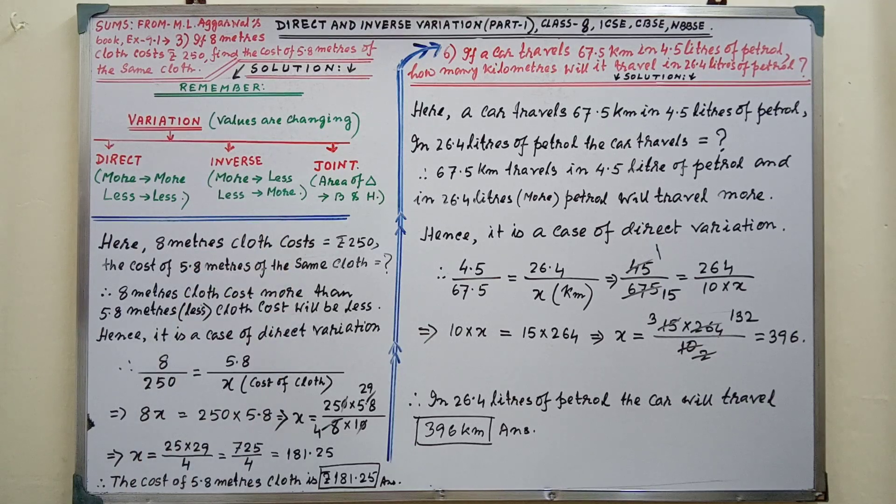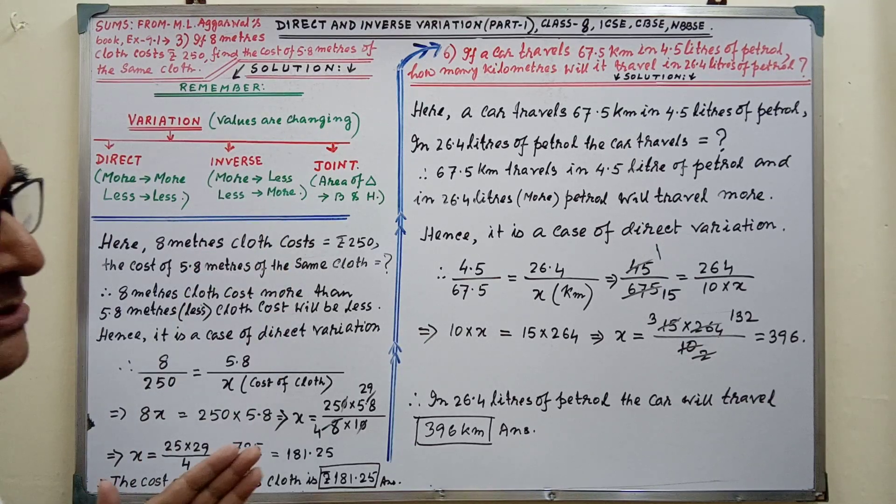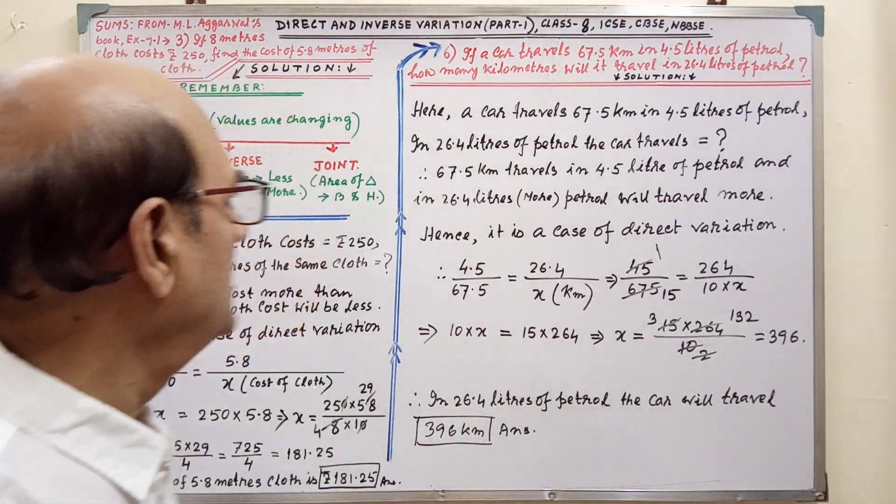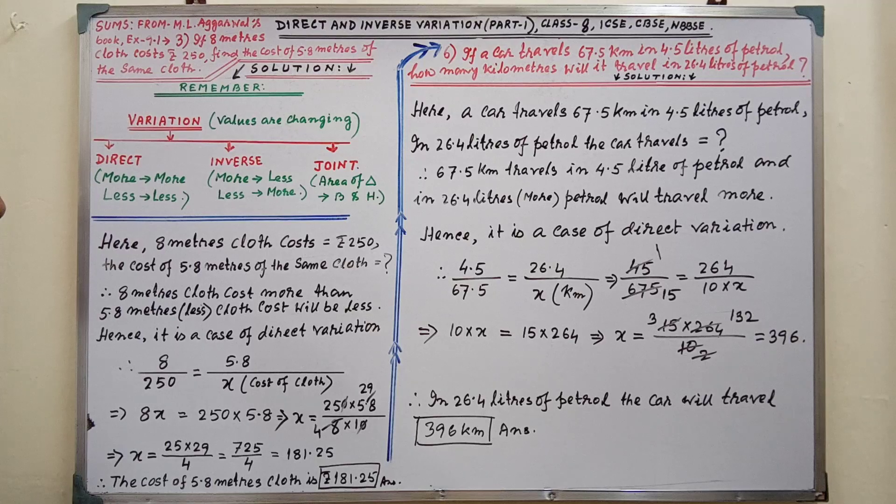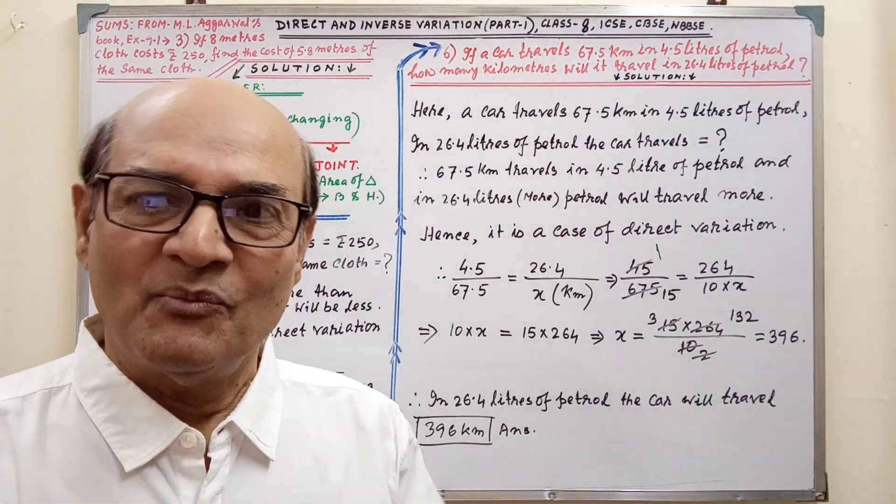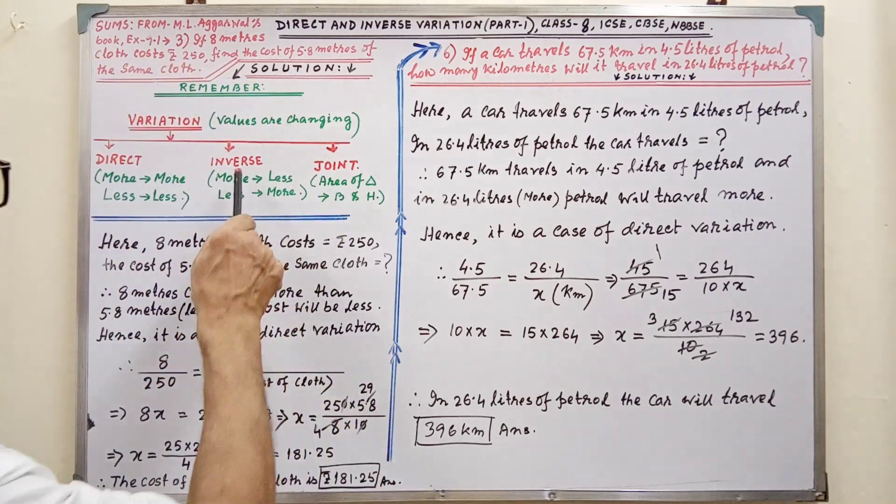What is direct? More and more. That means more cloth, more cost. Less cloth, less cost. And inverse, more and less. More labor, less time. Less labor, more time. This is the inverse.